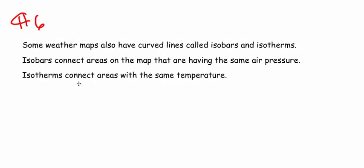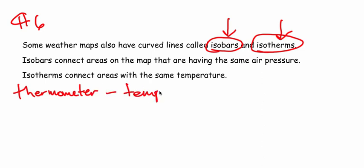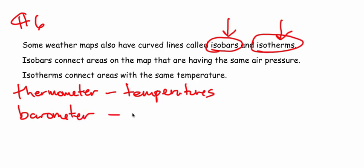Paragraph 6. Some weather maps also have curved lines called isobars and isotherms. We'll take a look at those in just a moment, but I do want you to note the roots of these words — therm and bar. We know that a thermometer is used to measure temperature, and that a barometer is used to measure air pressure.